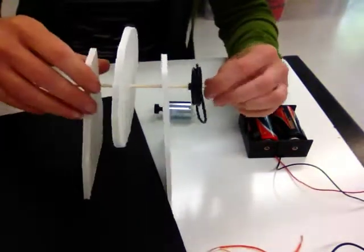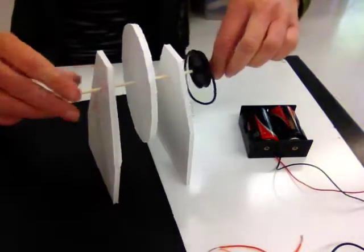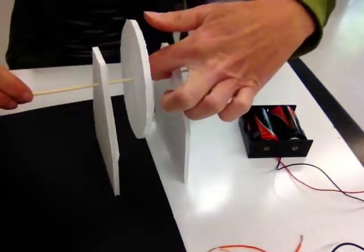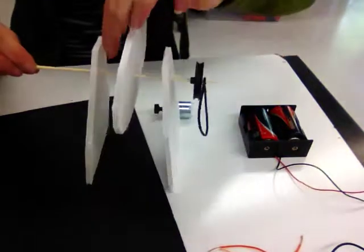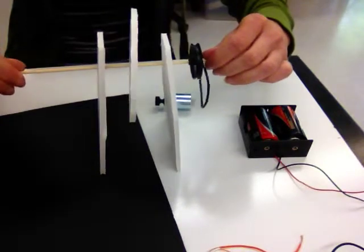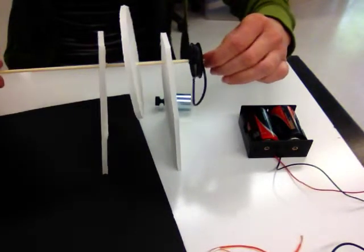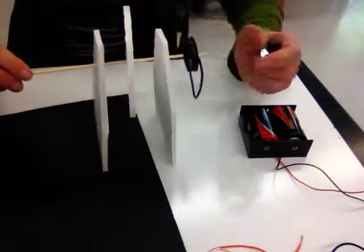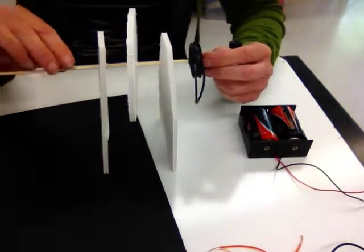You want to reduce friction inside here so that it spins really smoothly. I've seen students even put a straw inside this hole and a straw inside this hole so it spins very cleanly with little friction. And that means that the whole thing works better. And then this whole structure also needs to be really steady. So that's how you do it.